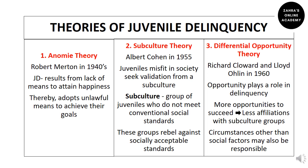The next theory is subculture theory, presented in 1955 by Albert Cohen. According to Cohen, juveniles who do not fit in society seek validation from a subculture — a group of juveniles who do not meet conventional social standards. Juvenile delinquency results because these juveniles are unable to fit into society, so they rebel, and as a result delinquency takes place.